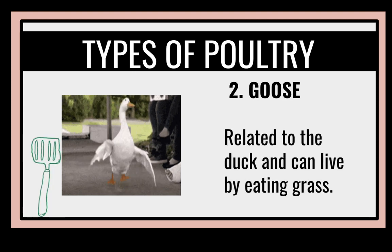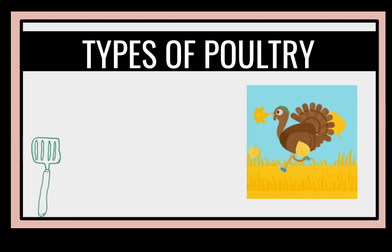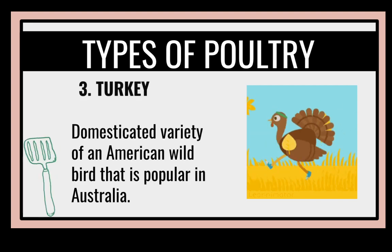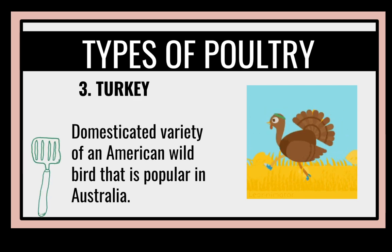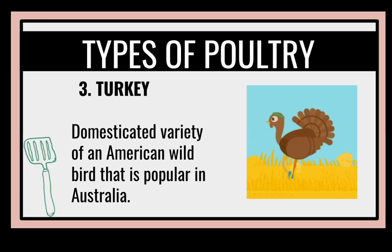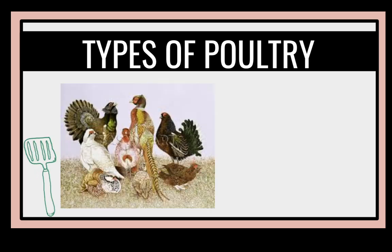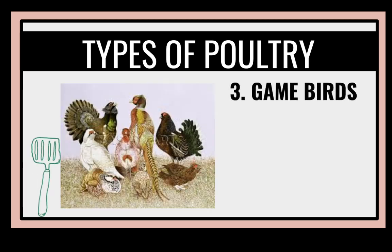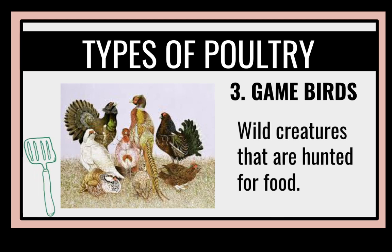Goose is also a type of poultry. They are related to the duck and can live by eating grass. Turkey is a domesticated variety of an American wild bird that is popular in Australia. In the U.S., they eat turkey for Thanksgiving Day. Types of poultry also include No. 3, game birds — wild creatures that are hunted for food.